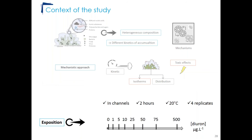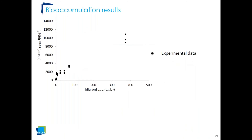Biofilms were exposed in channels for two hours — after equilibrium — at 20°C, to eight increasing diuron concentrations: 0, 1, 5, 10, 25, 50, 75, and 500 micrograms per liter. Results for bioaccumulation show diuron concentration in the biofilm in micrograms per gram as a function of diuron concentration in the water in micrograms per liter. Three different stages are observed: first an increase of diuron concentration in the biofilm, then a saturation phase, and then again an increase.